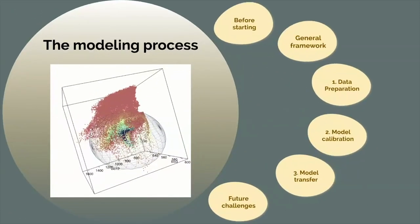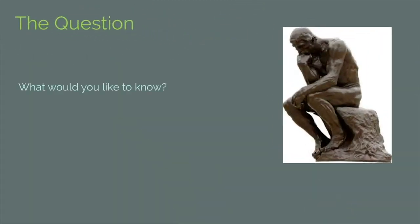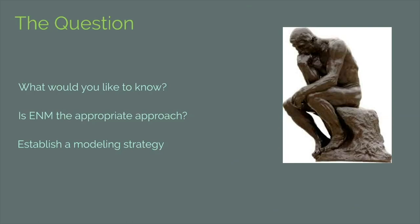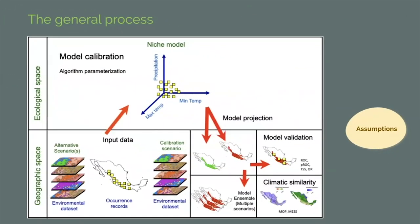This matters because it is very common, mainly for people beginning in this field, that they do projections to the past or future simply because it is possible to do so, and not because they have a specific and well-settled question to address or answer. So before starting a modeling process, you have to find out what question you want to ask, and whether ecological niche modeling is the appropriate approach for addressing that question. If that is true, then you have to think very carefully about your modeling strategy.